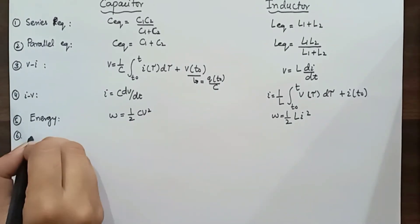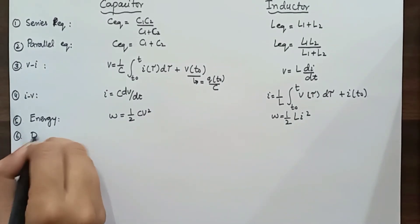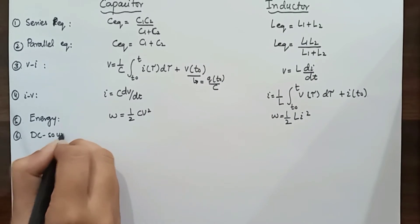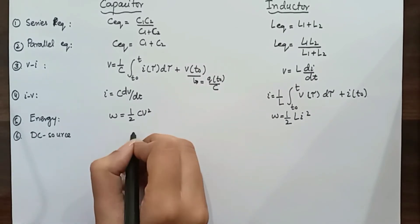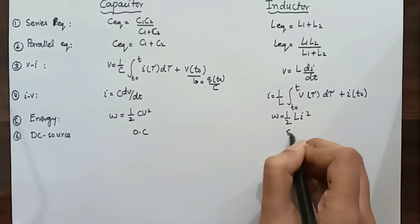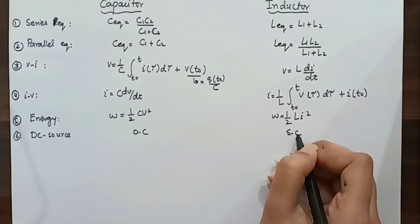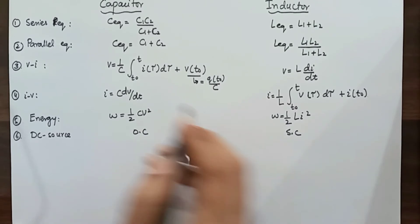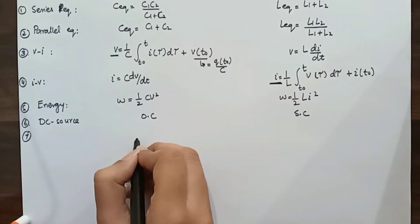Next is how capacitors and inductors behave with a DC source. If a DC source is connected across a capacitor, the capacitor blocks the DC and does not allow it to pass through. An inductor behaves as a short circuit to a DC voltage.